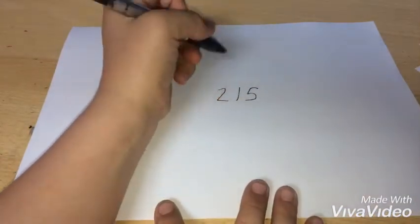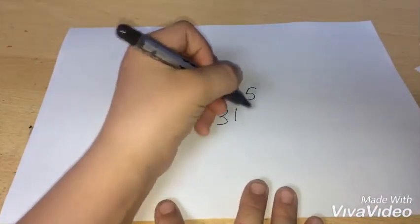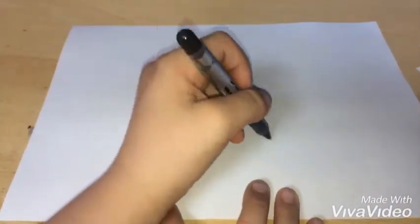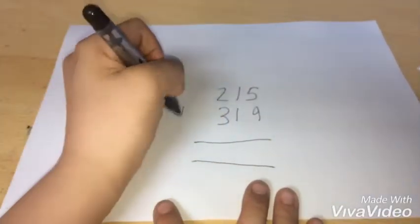Hi, today I'll show you how to do column addition step by step. We'll start off with 215 add 319. So you lay out any number first and any second, so then you do an answer box and a plus sign because you're doing column addition.